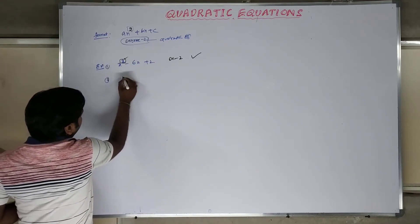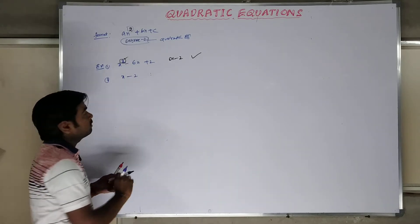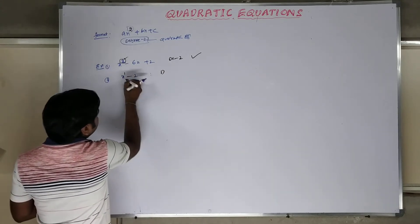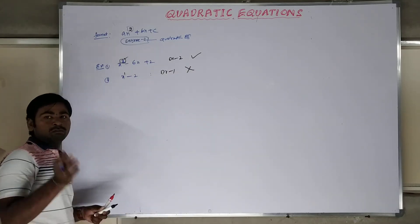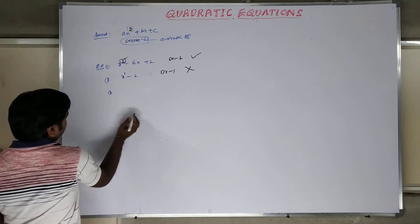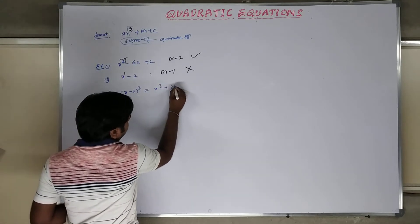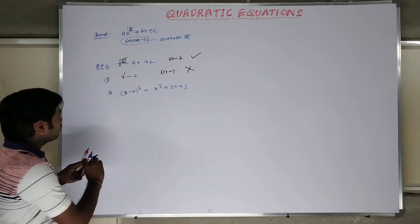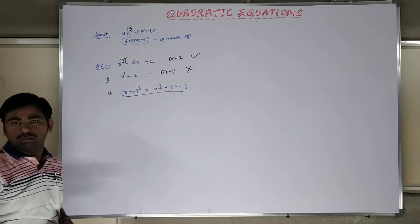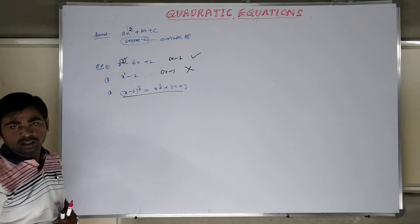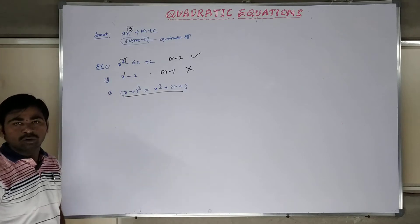Return to example 2: x minus 2. The degree is only 1 because the power is only 1, so it is not a quadratic equation. Sometimes the question will come in different ways. For example: (x minus 2)³ and x³ plus 2x plus 3. It looks like a third-order equation, but you must open and simplify the complete equation before deciding whether it is a quadratic equation or not.